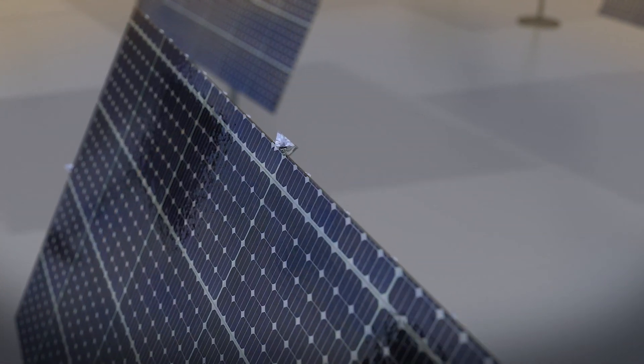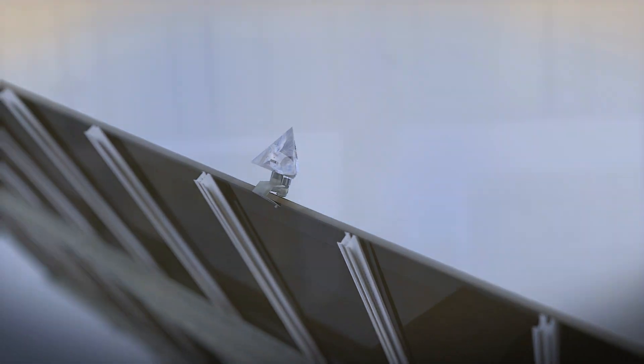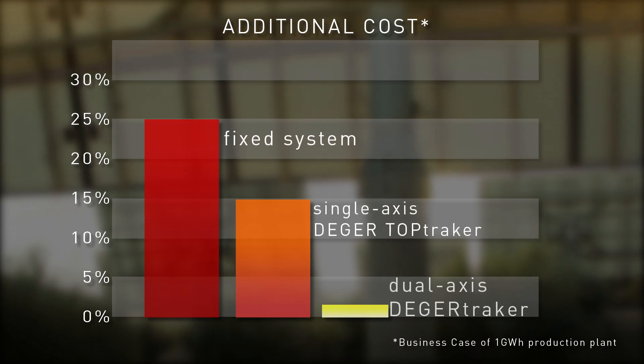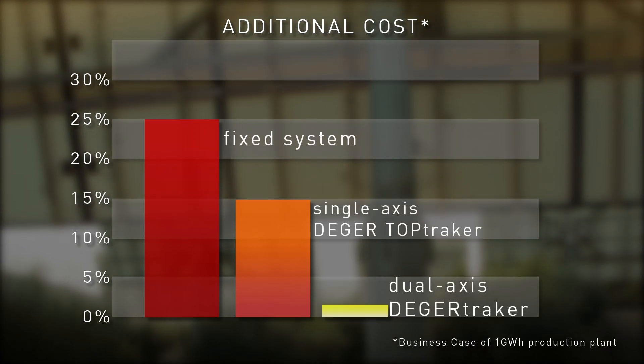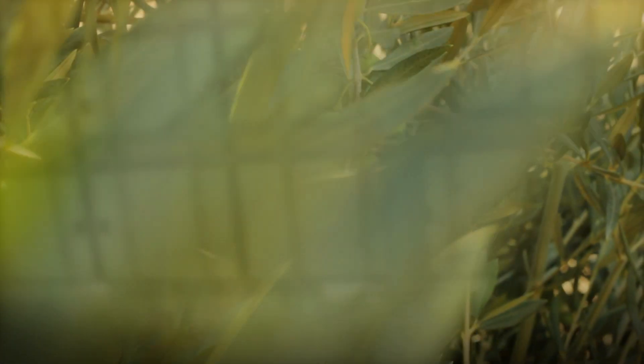The optimized energy output of Digger Trackers will save an investor a 25% higher expenditure than equivalent fixed systems. Investing in Digger Trackers, customers will realize a profitable internal rate of return.